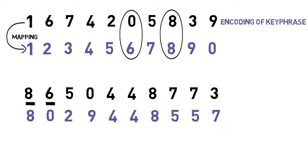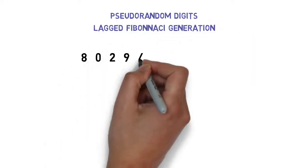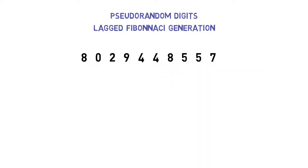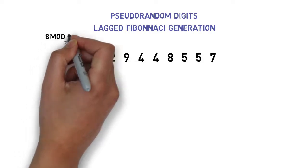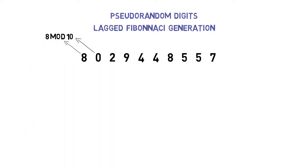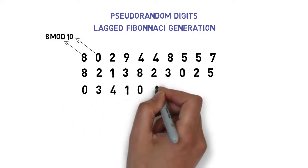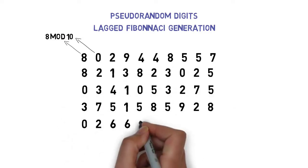The penultimate step to reaching our straddling checkerboard is to generate 50 pseudorandom digits through lagged Fibonacci generation. We're going to use the sequence we just produced for that. As mentioned before, to achieve that, we add the first two digits, apply a mod-10 operation on the answer, and append that to the right. We're going to repeat this process till we generate 50 new pseudorandom digits.